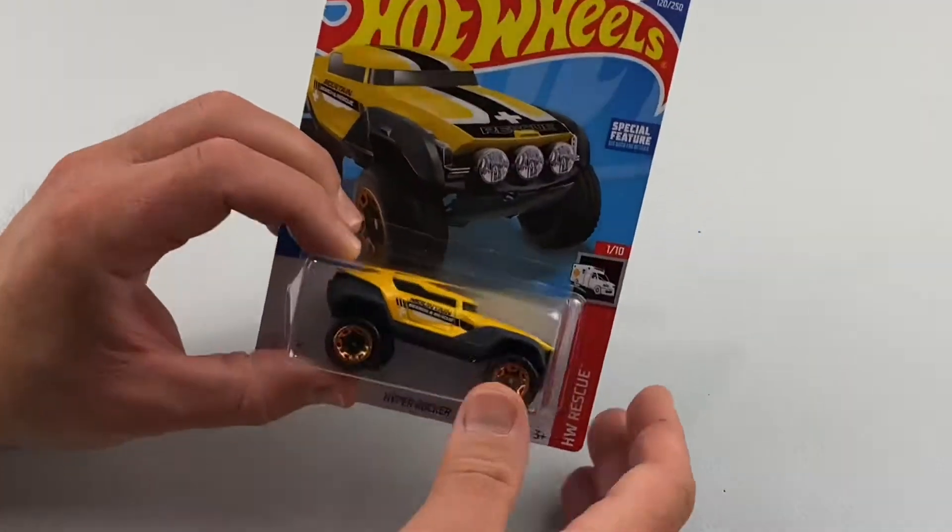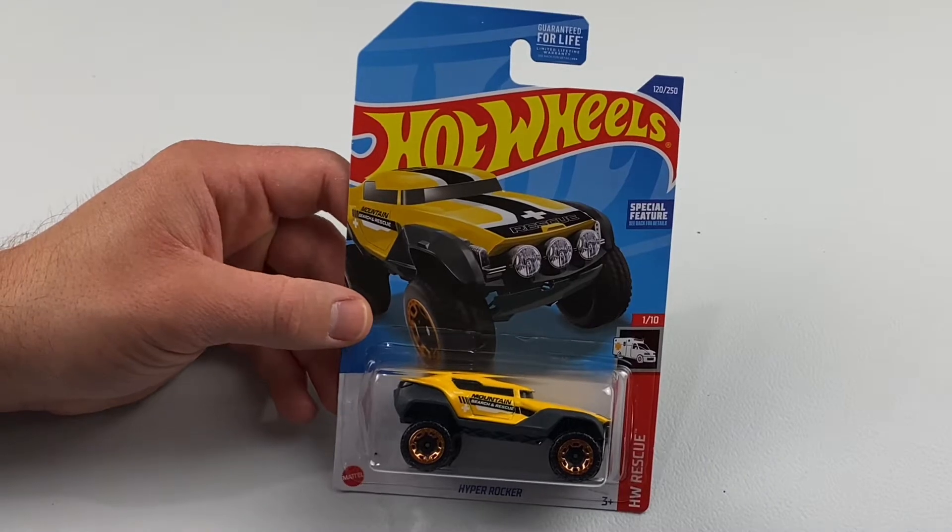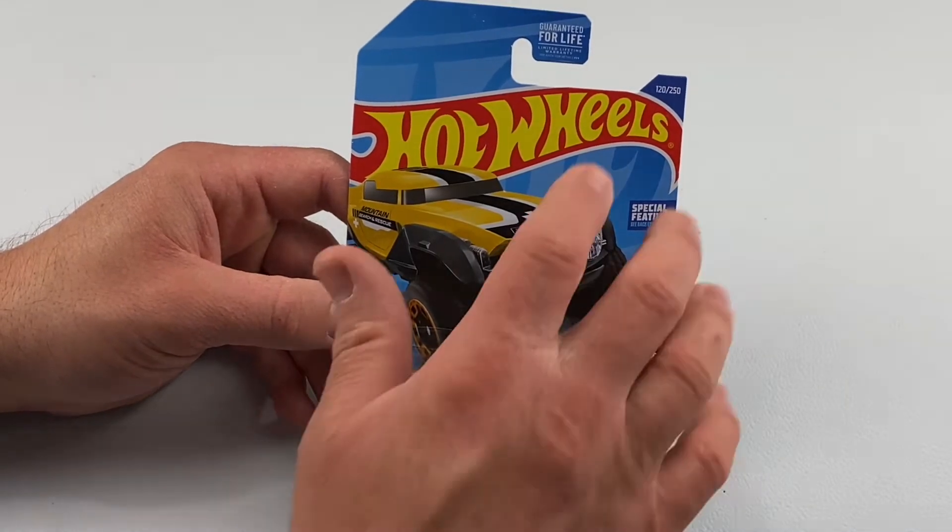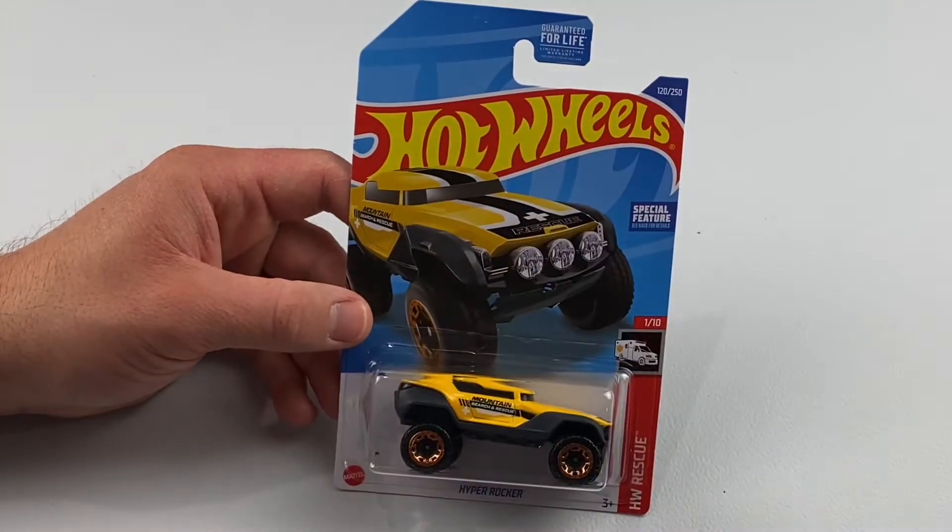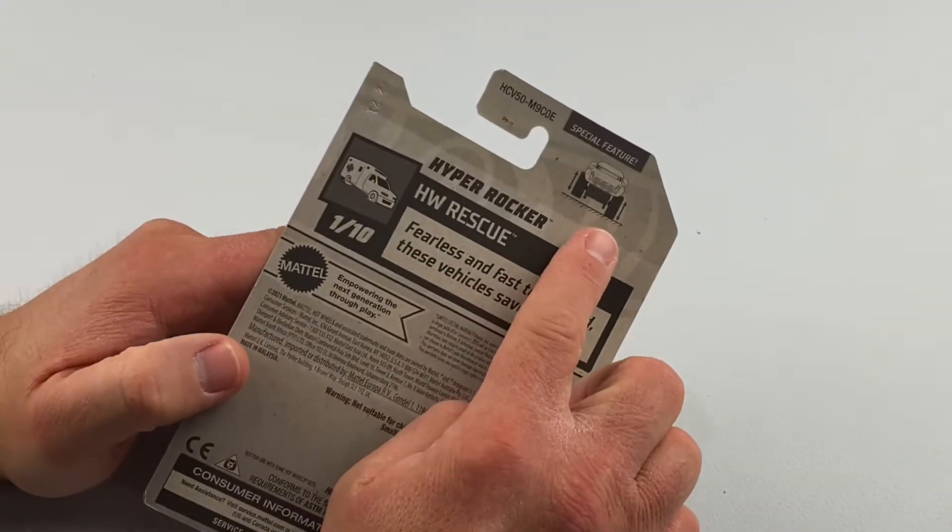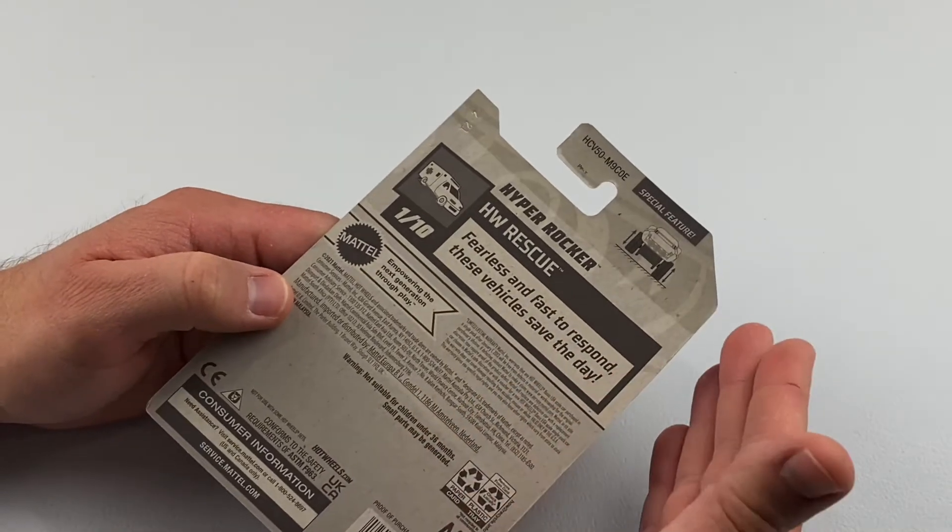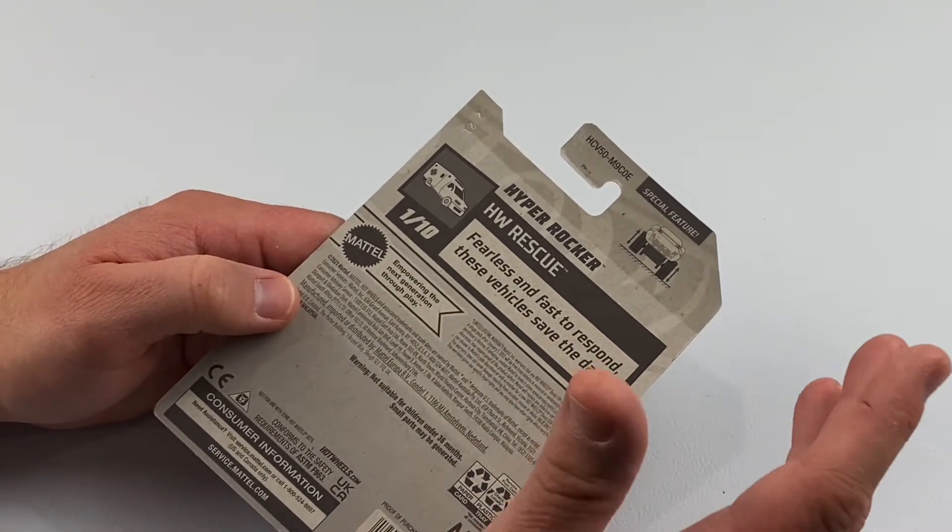Hello and welcome back, we're going to be opening up the Hot Wheels Hyper Rocker today. This is 120 of 250 set. Special feature - it should be able to have adjustable tires that can go up and down. Not sure if it stays that way or if they just bounce like with shocks, so we'll see.